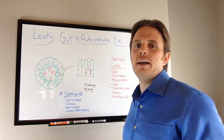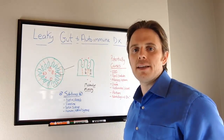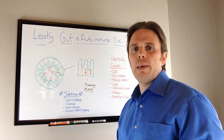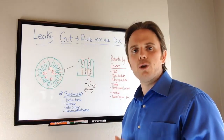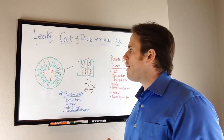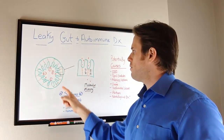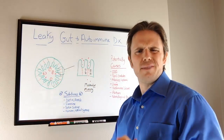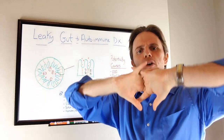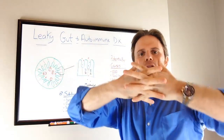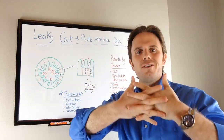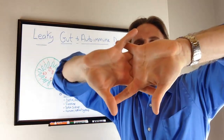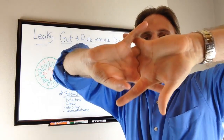Let's go over what a leaky gut is first so everyone has that basic foundational understanding. In the scientific literature it may be referred to as gastrointestinal permeability. This is your intestine — this is the inside where the food would go. To keep it really simple, interlock your fingers together like this. These are what I call your tight junctions; they line your gastrointestinal tract, especially the small intestine. That's what your tight junctions look like — your fingers tight together.